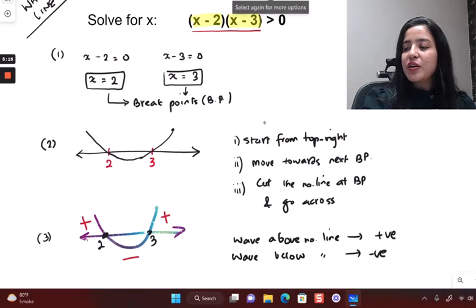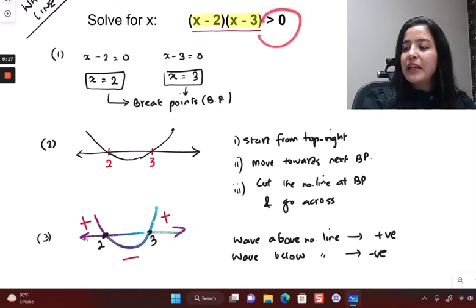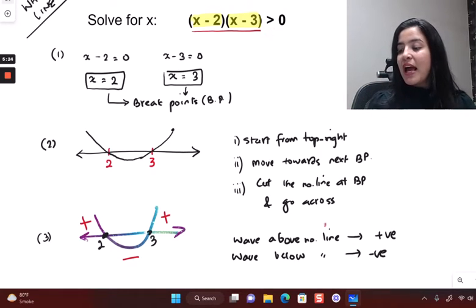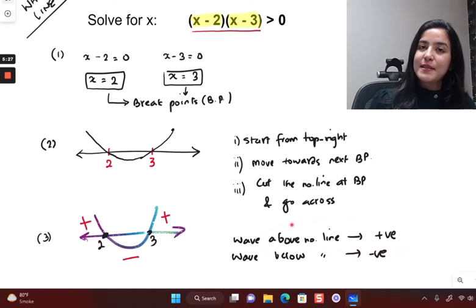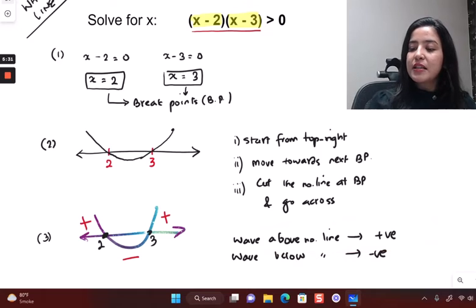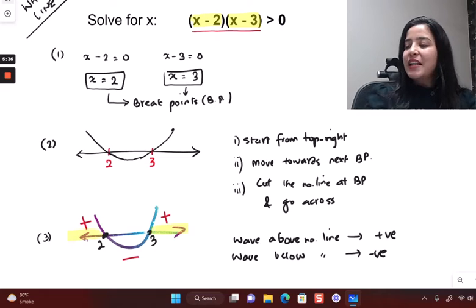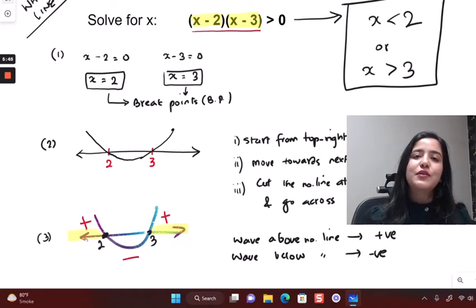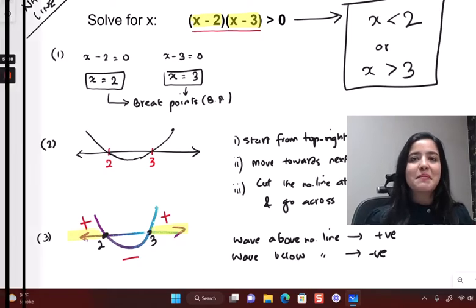Then you just see what your question wanted. Your question, as you see here on top, wants it to be greater than zero. So if you want it to be greater than zero, which region do you want? I just showed you that above the number line corresponds with being positive. And therefore your final answer is going to be all of this region where it's above the number line. And the final answer, therefore, for this inequality is x less than two or x greater than three. That's it. All of these values of x are going to work. That's it. This is the method.